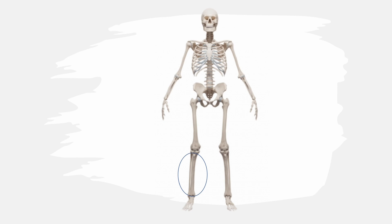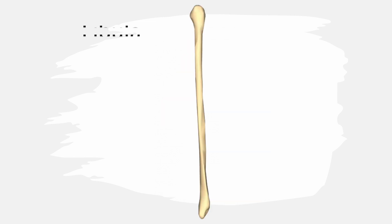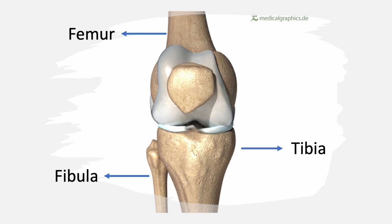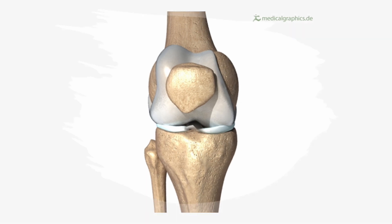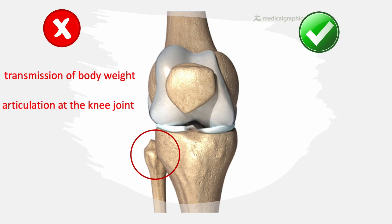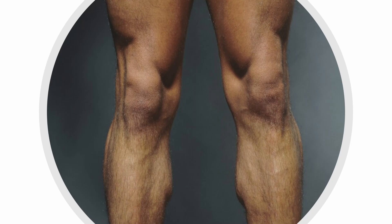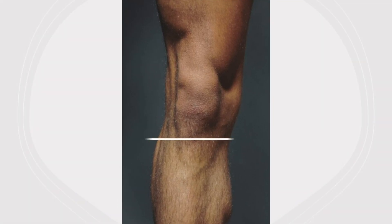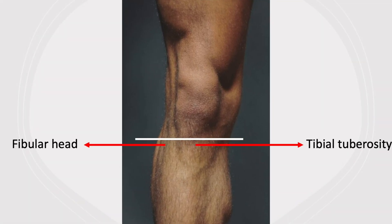The fibula is a cylindrical lateral bone of the leg. It takes no part in the articulation at the knee joint, and it also takes no part in the transmission of body weight, but it provides muscle attachments. The head of the fibula can be palpated easily at the level of the superior part of the tibial tuberosity, because its knob-like head is subcutaneous at the posterior lateral aspects of the knee. The neck of the fibula can be palpated just distal to the fibular head.